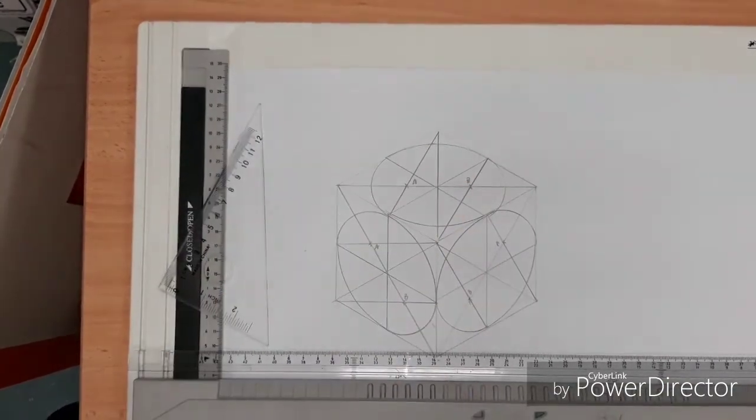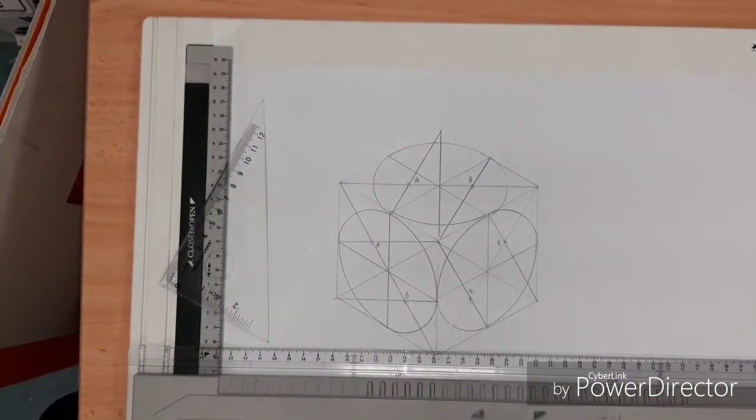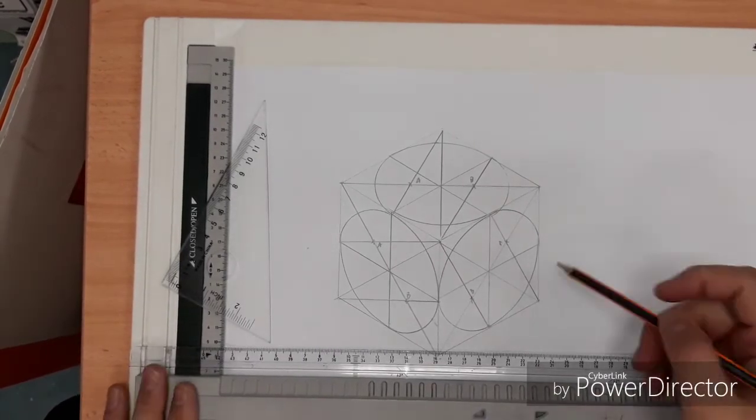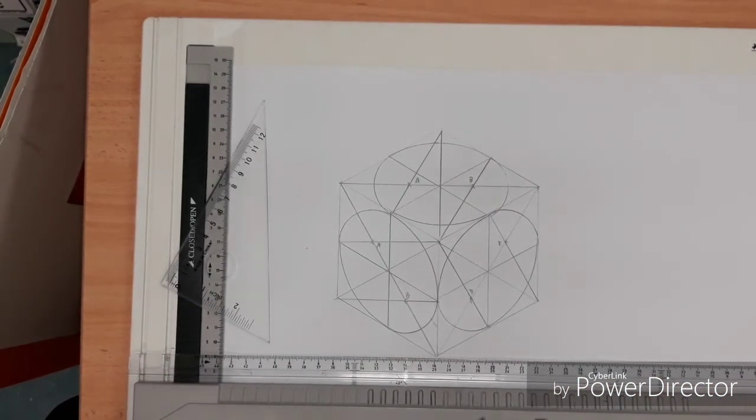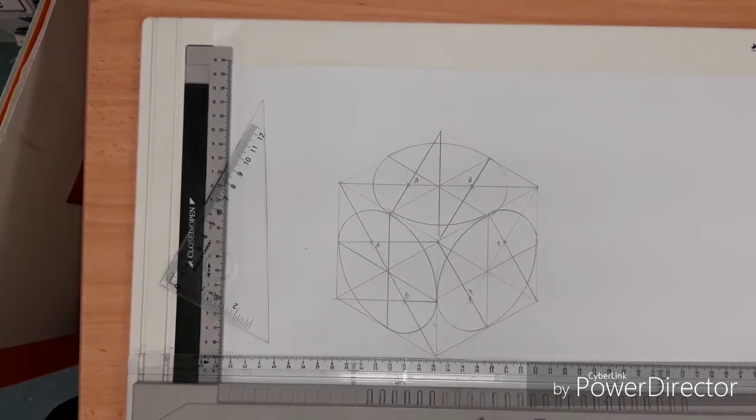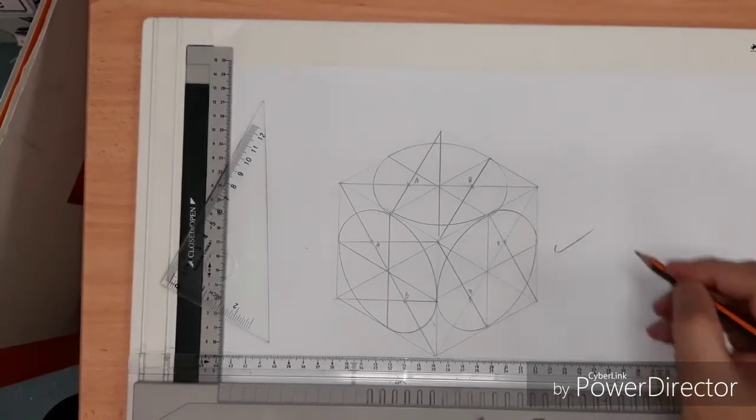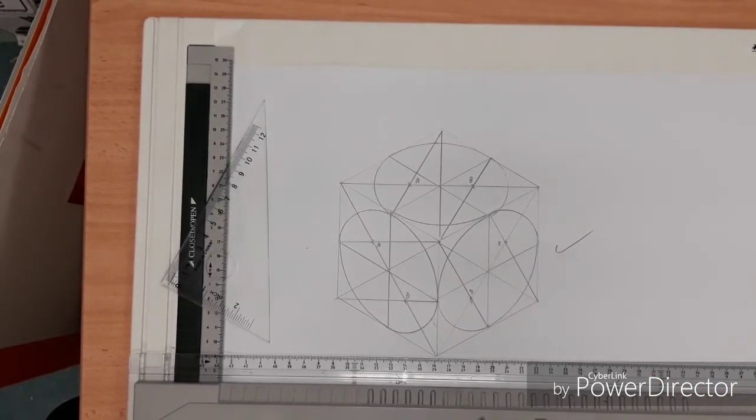So there we have it. Three isometric circles in an isometric cube. And the process is exactly the same for three of them. You just need to kind of understand your perspective and your positioning. Good luck. Have a go yourselves. This is quite common in the exam.